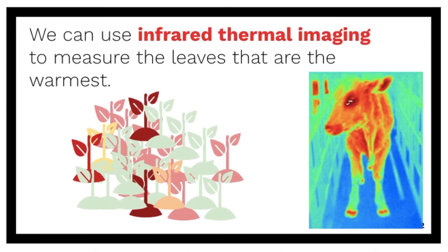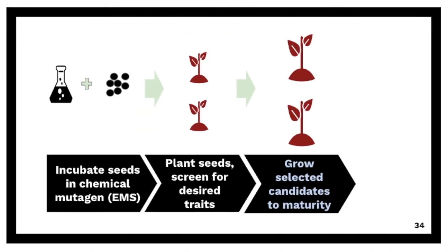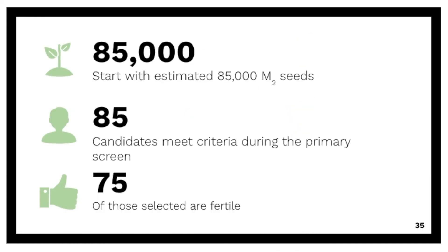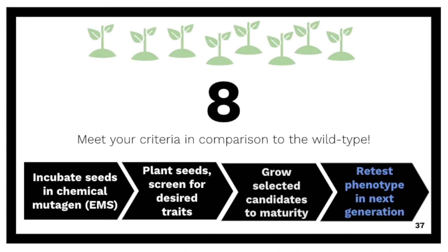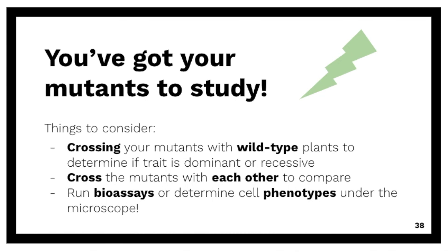With the thermal imaging, we can really easily distinguish these mutants from others in a wild-type population. After we select our mutants, we're going to grow them to maturity so that they can be crossed. If we start with several tens of thousands of seeds, we might find a few that are actually fertile and can pass the heritable phenotype onto the next generation. We'd then find a few that meet our criteria, cross them, and retest in the next generation. Now we've got our mutants to study. We can consider crossing our mutants with wild-type plants to determine if the trait is dominant or recessive, cross the mutants with each other to compare, or run bioassays or determine cell phenotypes under the microscope.